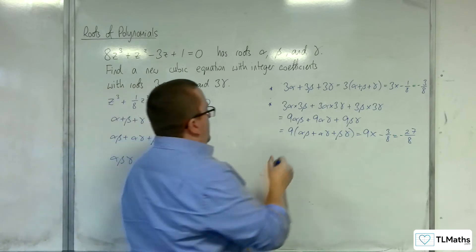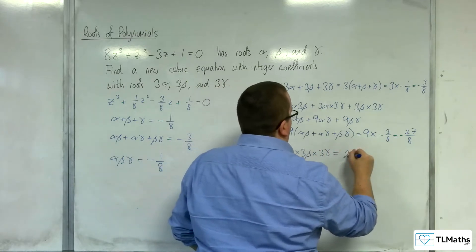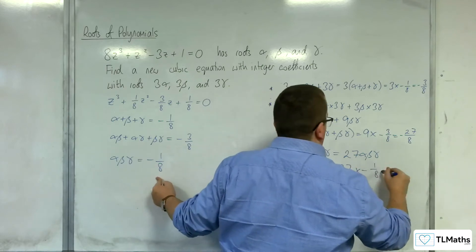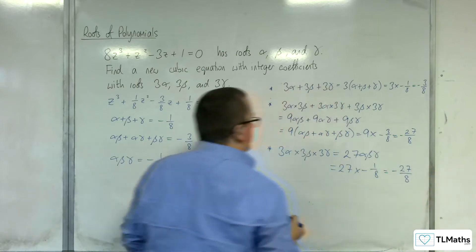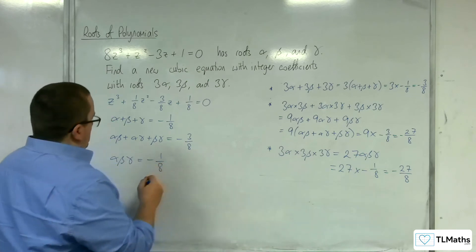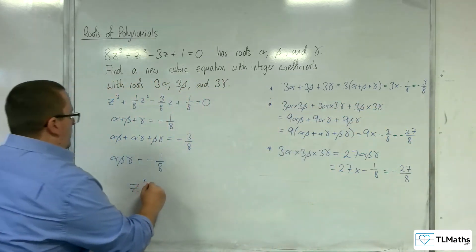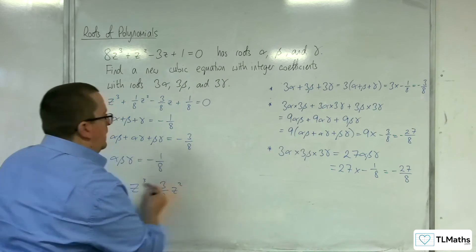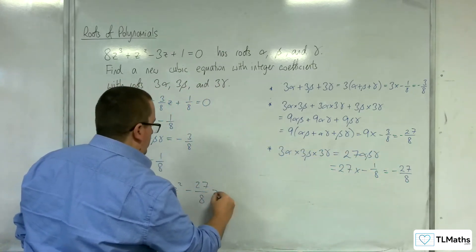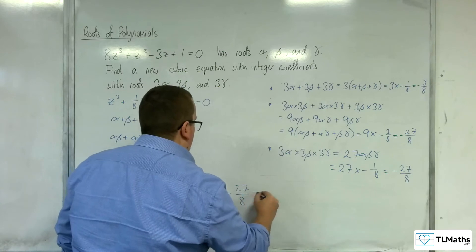Finally, we have the product of our three new roots: 3 alpha times 3 beta times 3 gamma, which is 27 alpha beta gamma. So 27 lots of minus one eighth is minus 27 eighths. We've got the three pieces we need. The new equation will be z cubed, then the negative of minus three eighths gives plus three eighths z squared, then minus 27 eighths z — this one doesn't change sign — and plus 27 eighths equals 0.